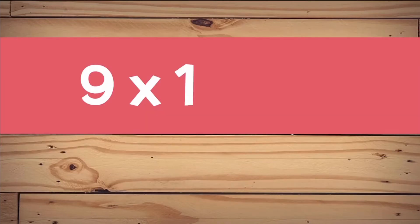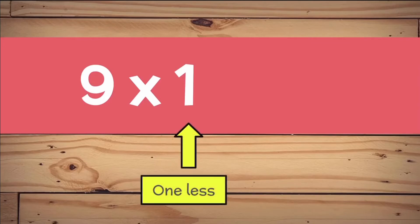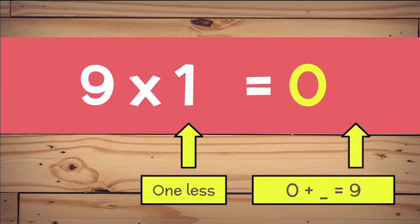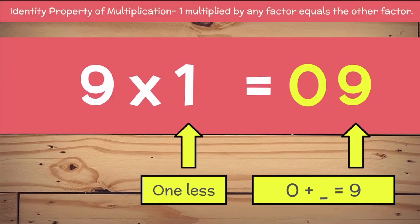9 times 1. Let's use the trick. Let's think: what's 1 less than 1? 1 take away 1 would be 0. Now let's think: 0 plus what number equals 9? 0 plus 9 equals 9, so 9 times 1 equals 9. We also know the identity property of multiplication states that 1 multiplied by any factor equals the other factor.